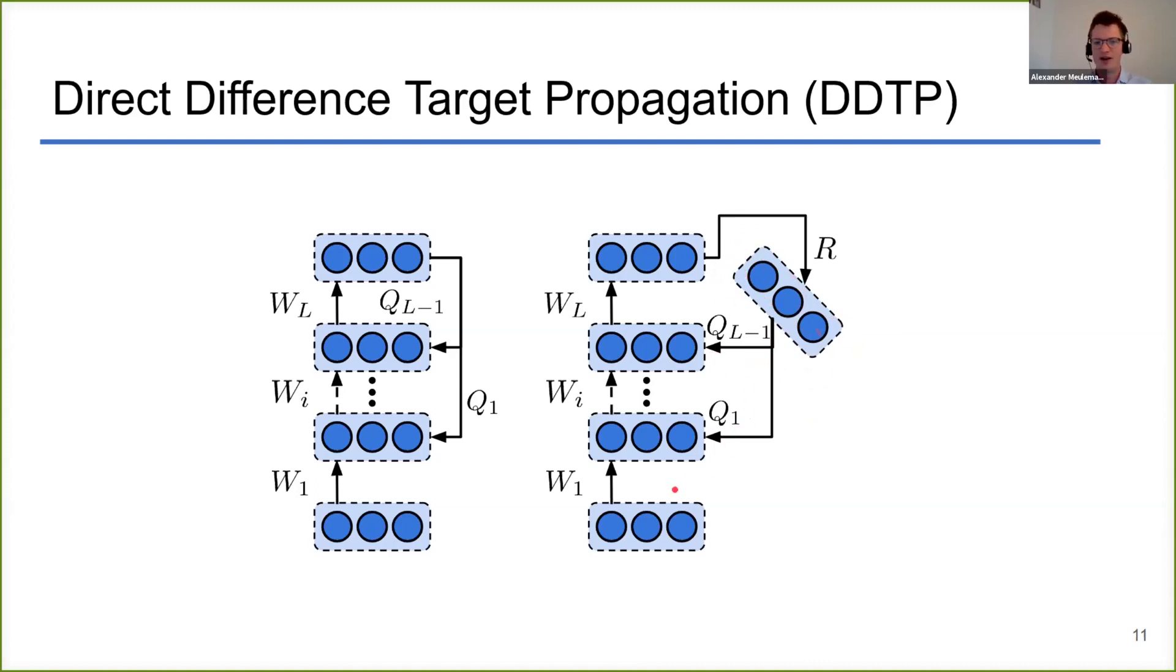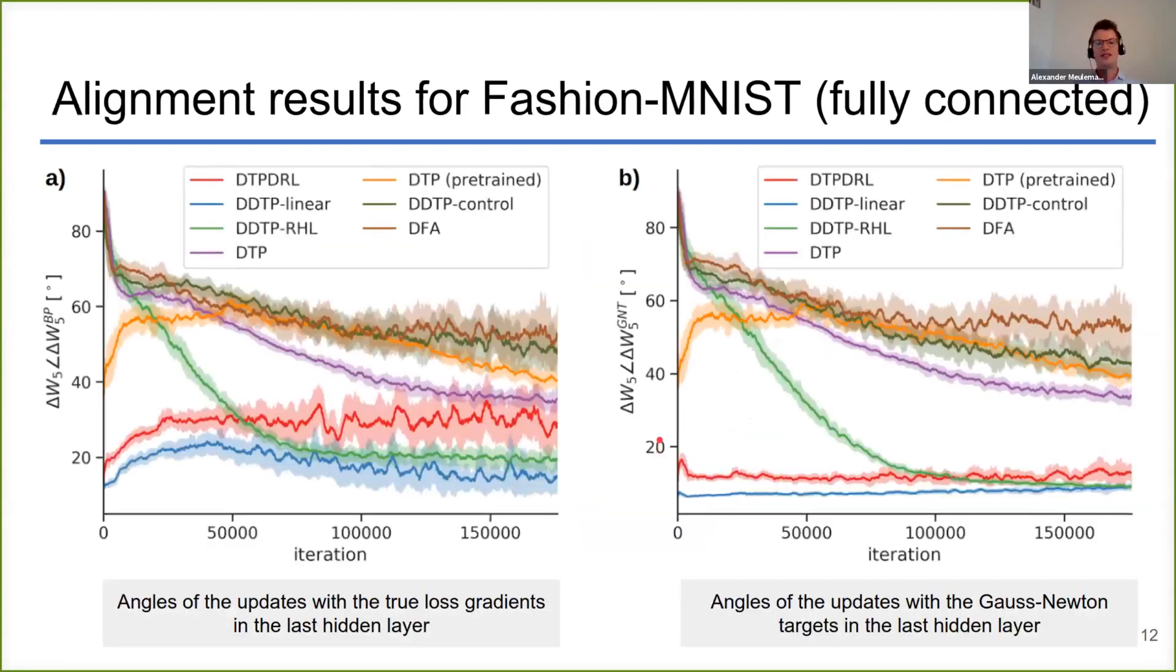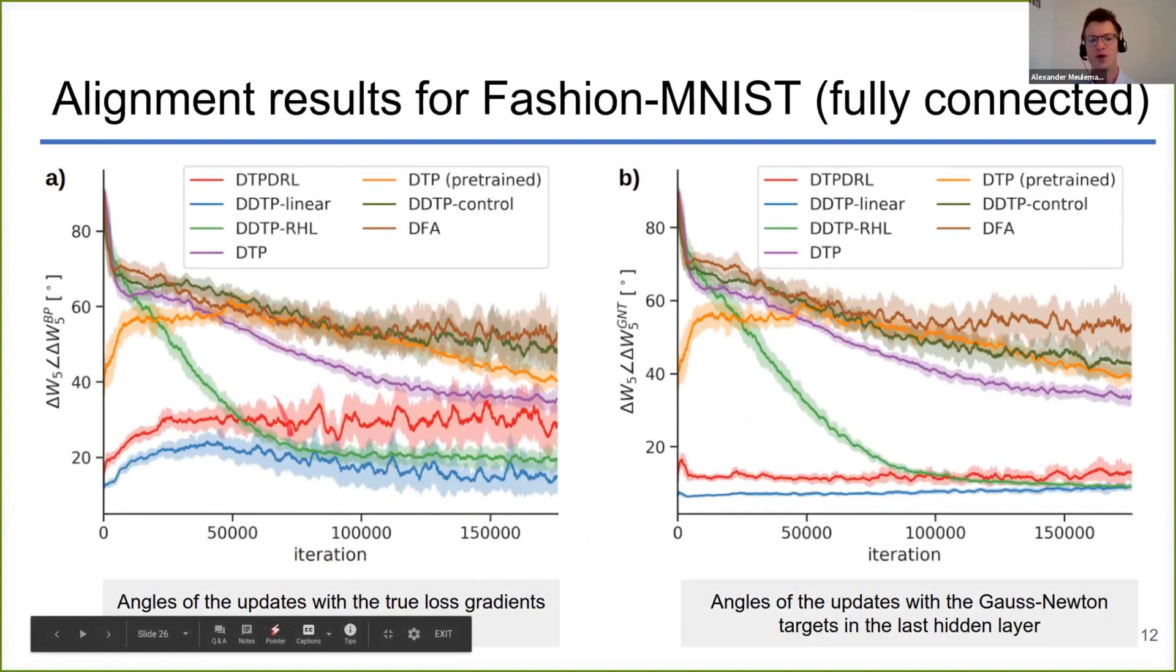Now all these theoretical benefits actually also translate into practical benefits. For example, here we show the results from Fashion-MNIST of the alignment of the updates for the forward parameters with the actual loss gradients—the updates that true backpropagation would do—and the ideal Gauss-Newton targets, the ideal theoretical updates that we derived in our framework.